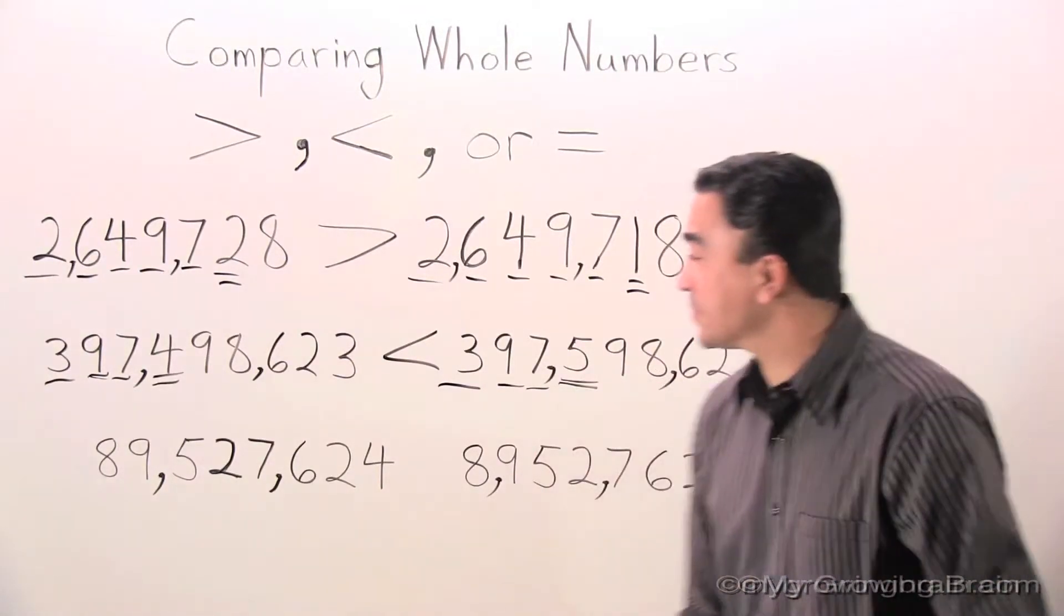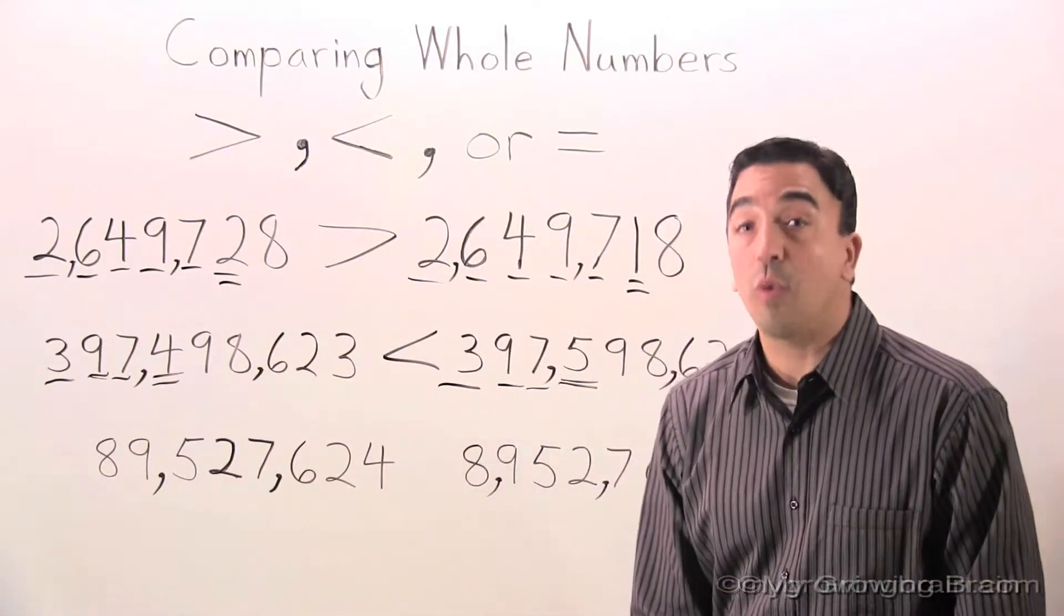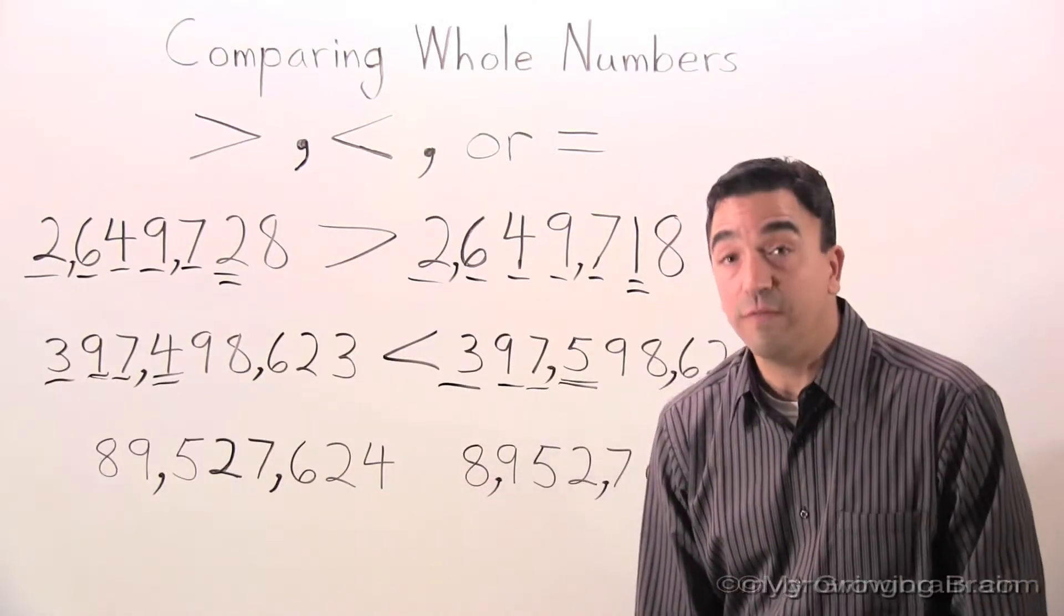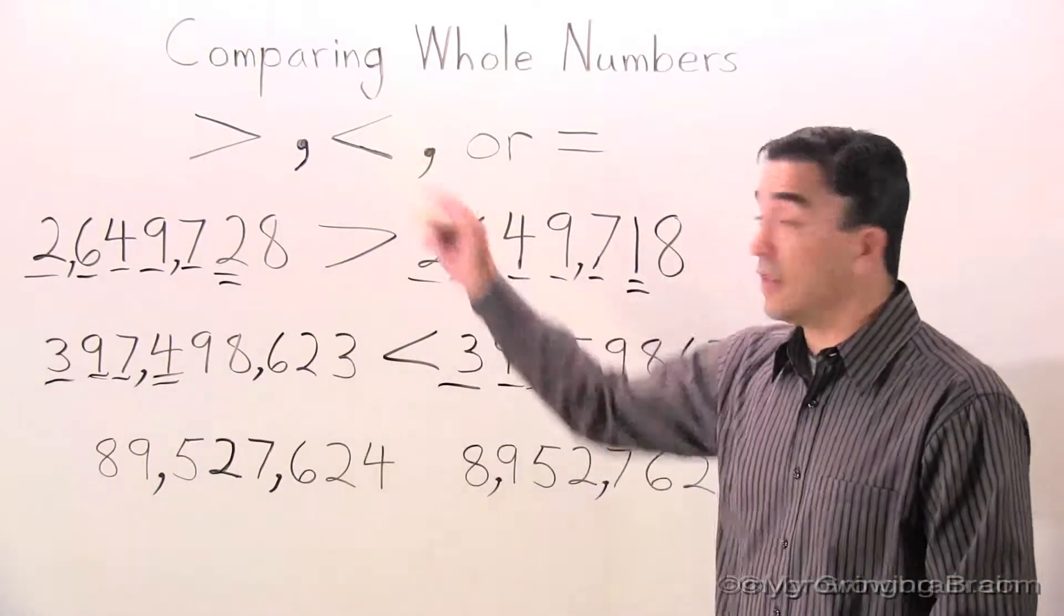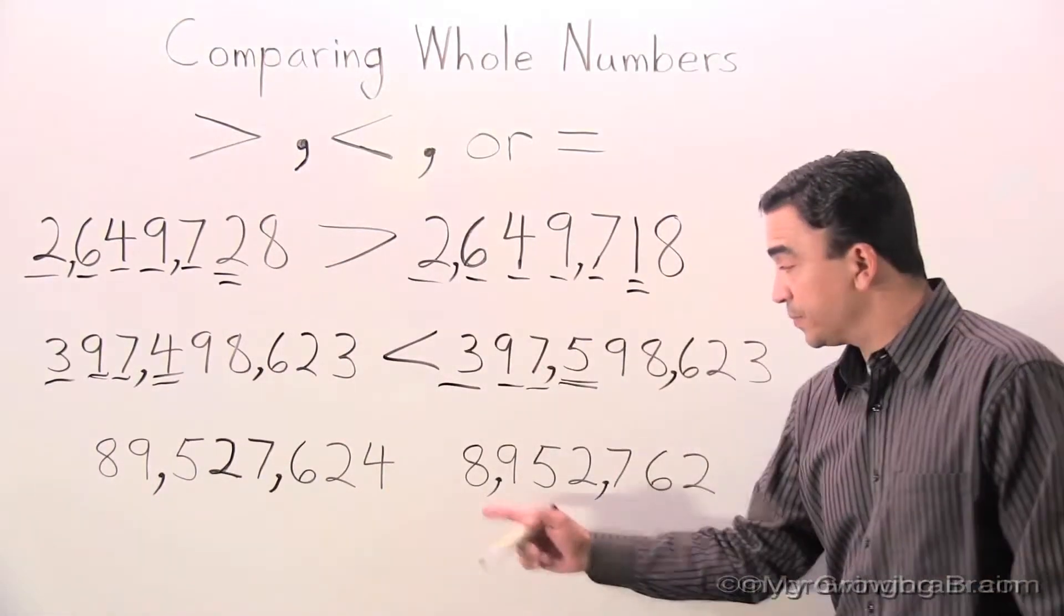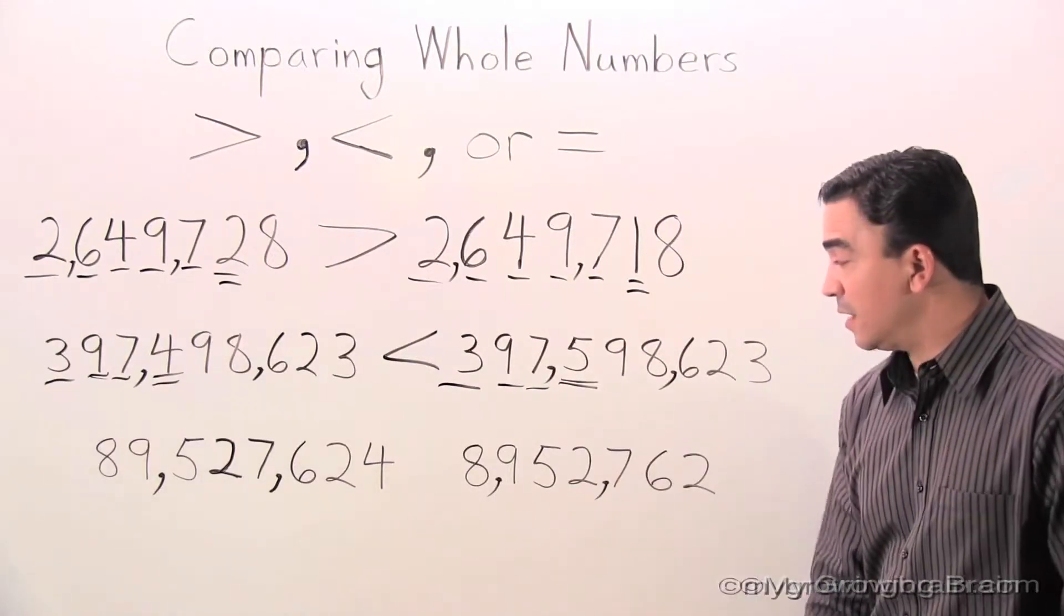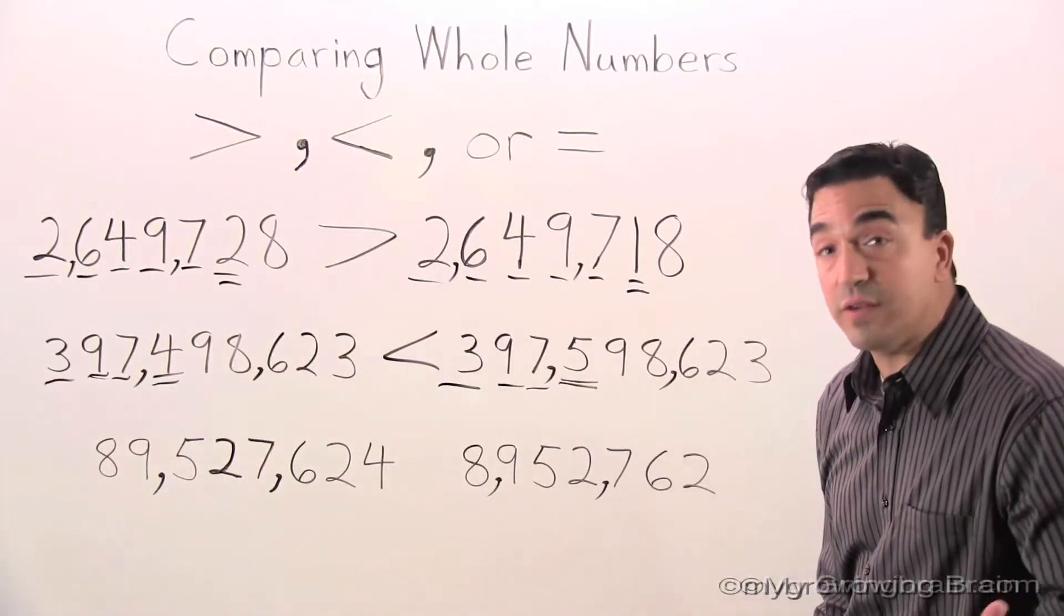Last problem. 89,527,624 is greater than, less than, or equal to 8,952,762.